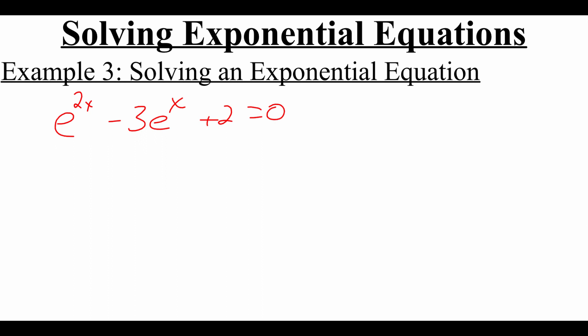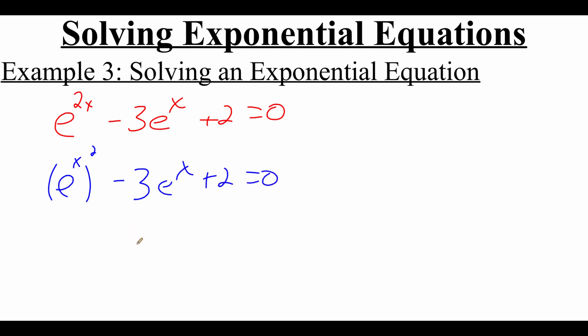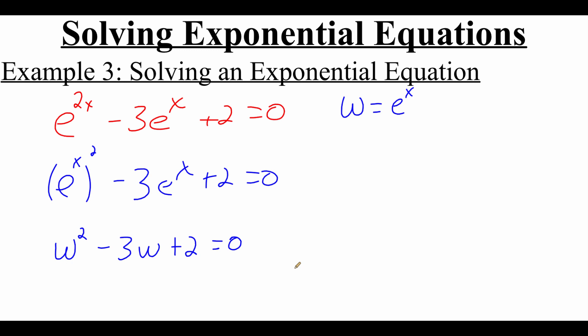In this equation we're looking at e to the 2x minus 3e to the x plus 2 equals 0. We're going to have to use a different algebraic strategy this time. This equation actually looks sort of like a quadratic. I'm going to take that first term, e to the 2x, and rewrite it. Properties of exponents say that a power raised to another power turns into multiplication, so we can rewrite this first term as e to the x, squared. Because if we multiplied that 2 and the x together we would get e to the 2x. Then this becomes e to the x squared minus 3e to the x plus 2 equals 0. Now I'm going to do a little bit of algebraic substitution and introduce another variable, w. I'm going to let w equal e to the x, so I can replace those e to the x's with w. This gives us w squared minus 3w plus 2 equals 0, which makes this equation a little bit easier to look at.